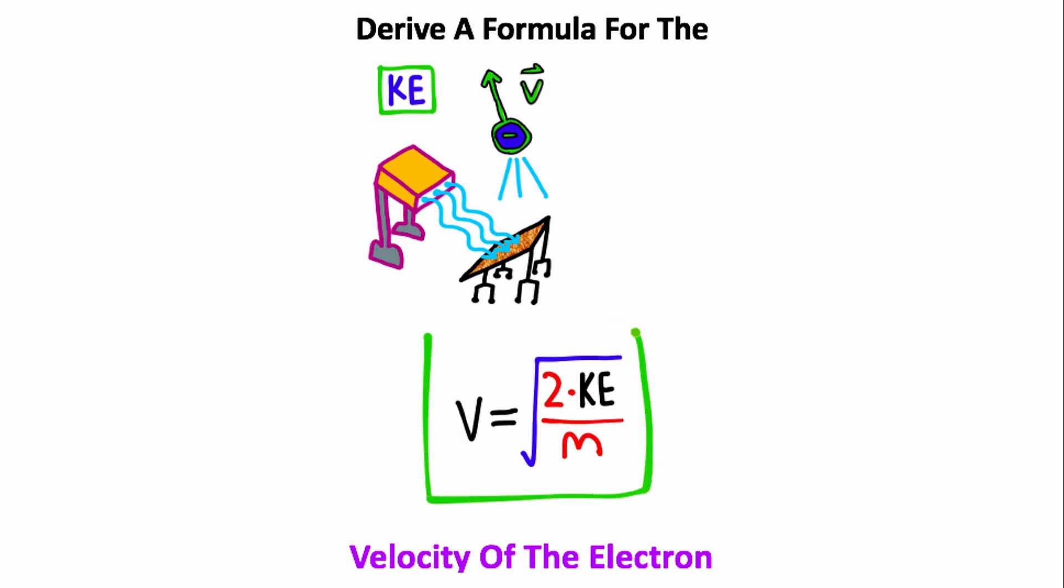This will give us a formula that looks like this. Now the mass in this formula is just going to be the mass of an electron. So if you have the kinetic energy, you can calculate the velocity of these quantum particles.